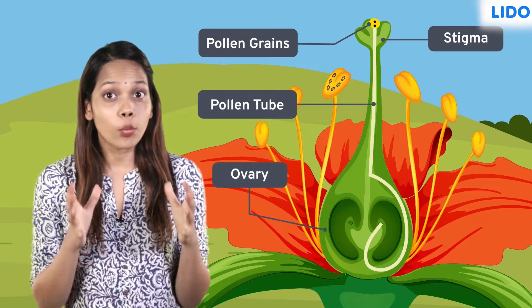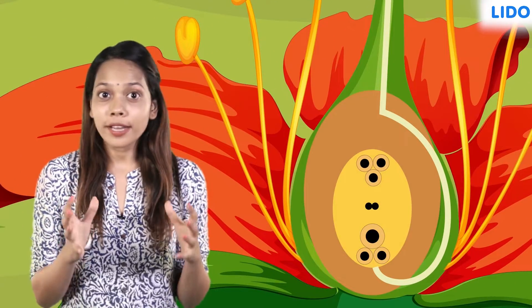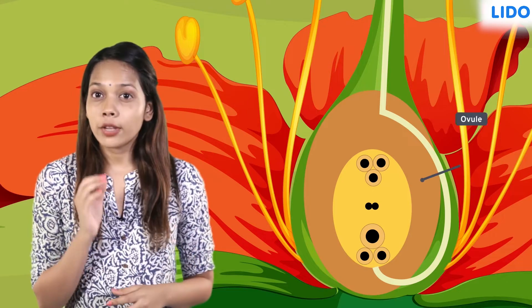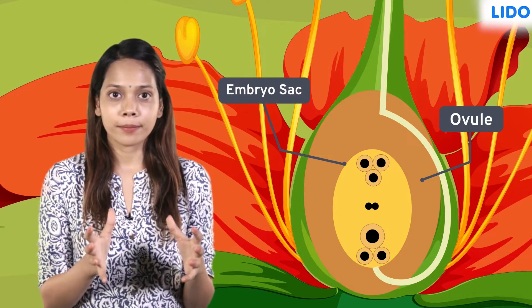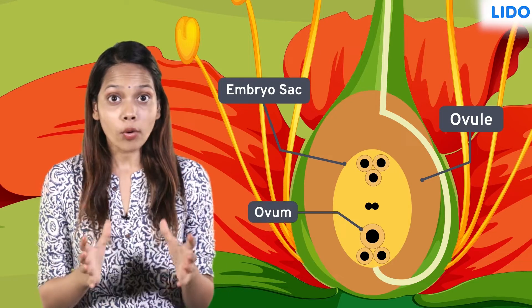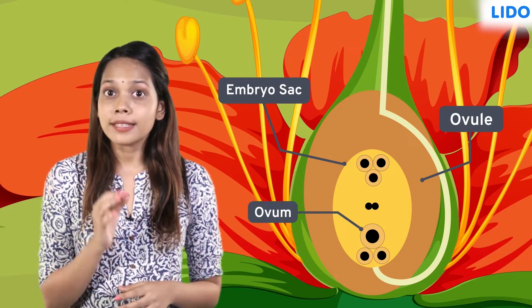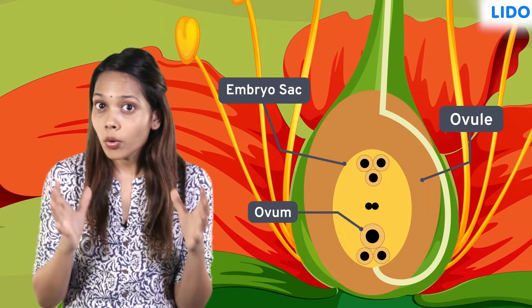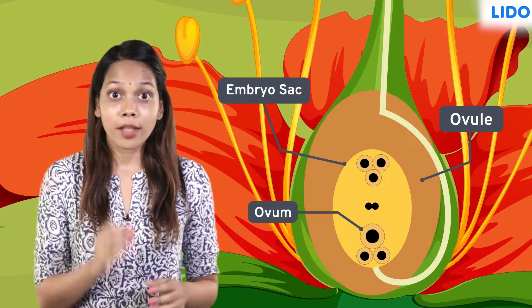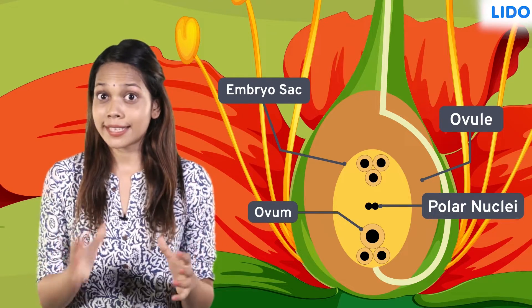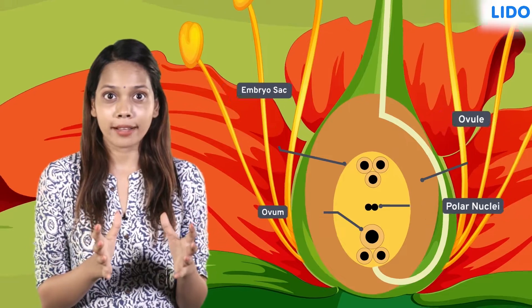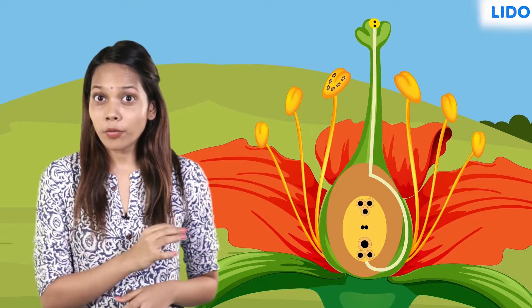Let's look at what is inside the ovary. The ovary contains an ovule, and the ovule contains an embryo sac within it. The egg cell, or the ovum, is present in the embryo sac along with many other cells. The polar nucleus is also present at the center of the embryo sac.